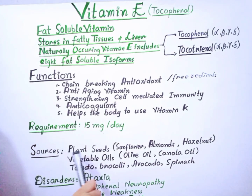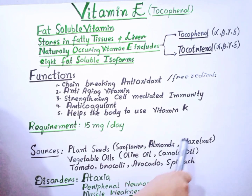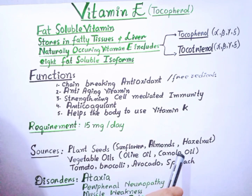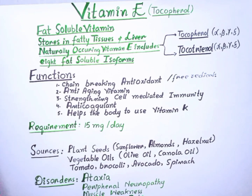The daily requirement of Vitamin E or tocopherol is 15 milligrams per day. We can get Vitamin E from plant seeds like sunflower, almonds, and hazelnuts. Vegetable oils are a major source, including olive oil and canola oil. Other sources include tomato, broccoli, avocado, and spinach.